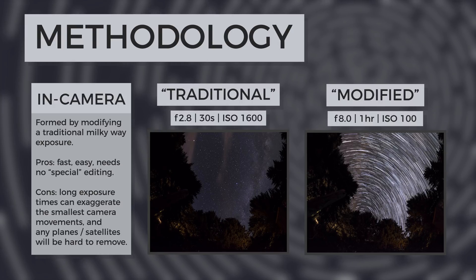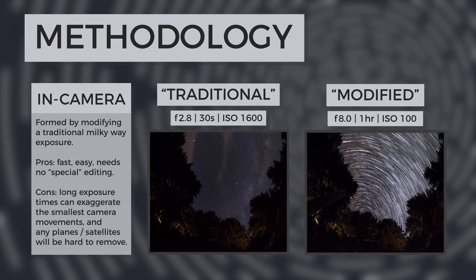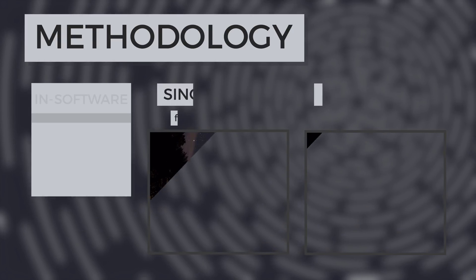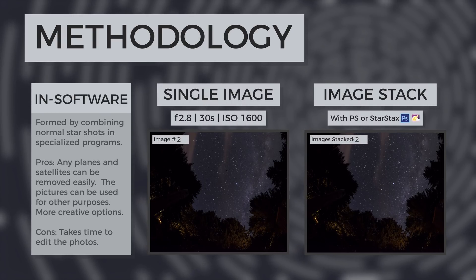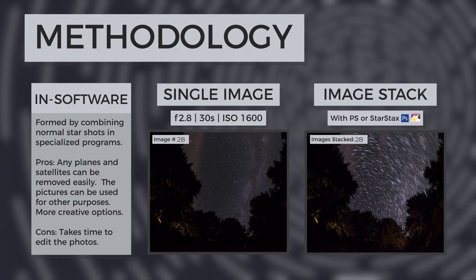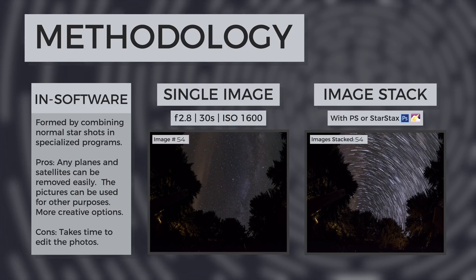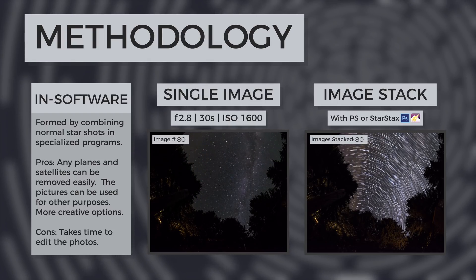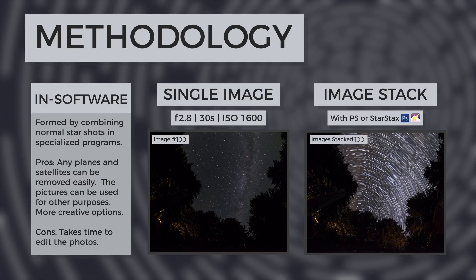This method is easy, but any movement in the sky or foreground, lights, or camera shake will be hard to correct. In-software star trails involve taking many sequential normal nighttime exposures with sharp stars and blending them using programs. This method is more time-consuming, but unwanted streaks are easier to remove, and the single frames can be used for other purposes as well.